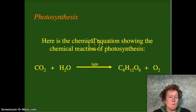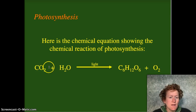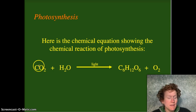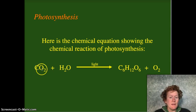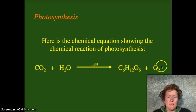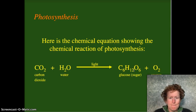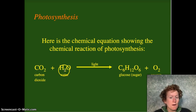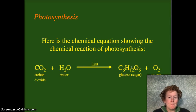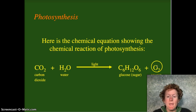Here's the chemical equation showing the chemical reaction of photosynthesis. These are the reactants — that's what's at the beginning of the equation. This is what plants need: they need carbon dioxide and water. They use light to power the reaction, and they make glucose and oxygen as products. CO2 is carbon dioxide, H2O is water, the reaction is powered by light energy from the sun, and it makes glucose — a type of sugar — and oxygen.